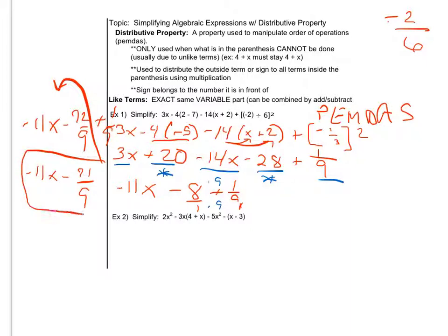And that is my final answer. Remember from the last video, I said we need to be able to be comfortable with getting an expression. We don't always simplify it down to a nice number. So the simplified form of my given expression is negative 11x minus 71 over 9.